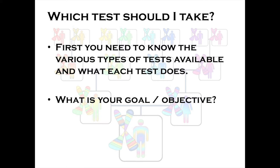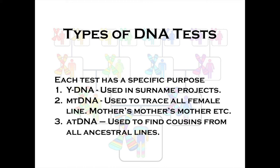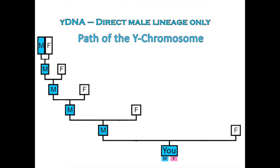There are three different types of tests. We have the Y-DNA test, which is used in surname projects — it traces the direct male lineage. The Y chromosome is passed down from father to son and goes virtually unchanged for thousands of years. Only men receive a Y chromosome, so only men can take that test.